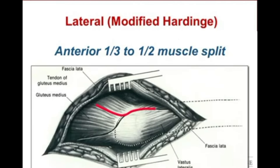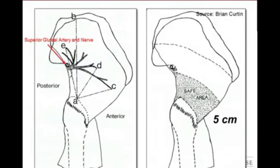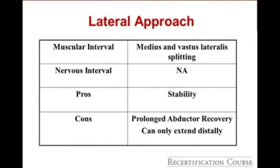The lateral approach, or the direct lateral or modified Hardinge approach, involves splitting the gluteus medius between the anterior one-third and the posterior one-third. Superior extension past five centimeters outside the safe area puts the superior gluteal artery and nerve at risk. The muscular interval involves vastus lateralis splitting as well as gluteus medius splitting. There is no true internervous plane. The benefit is stability; the downside is prolonged abductor recovery, and proximal extension can be challenging.